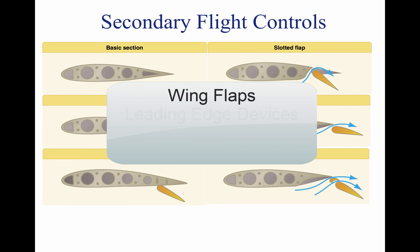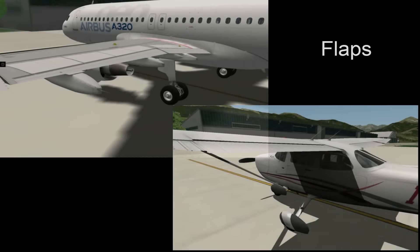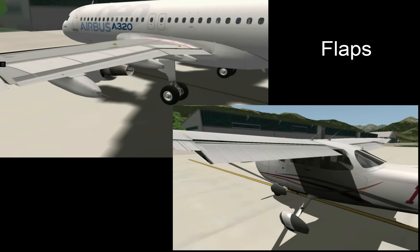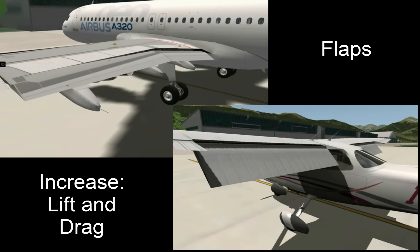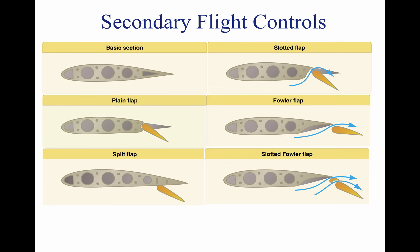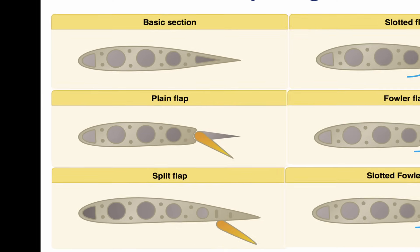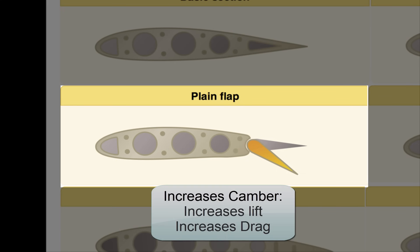Secondary flight controls may consist of wing flaps, leading-edge devices, spoilers, and trim systems. Flaps are the most common high-lift devices on an aircraft. They are attached to the trailing edge of the wing and increase both lift and drag for any angle of attack. There are four main types of flap: plain, split, slotted, and fowler flaps. The plain flap is the most simple design and increases the camber of the wing, which causes greater lift but also greatly increases drag. The split flap deploys from the lower surface of the wing and increases lift slightly more than the plain flap.